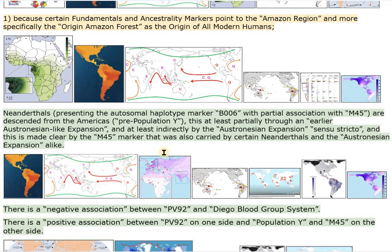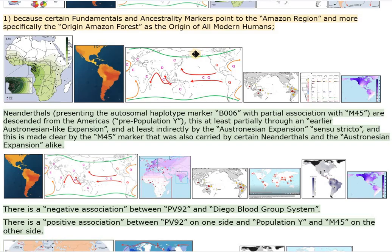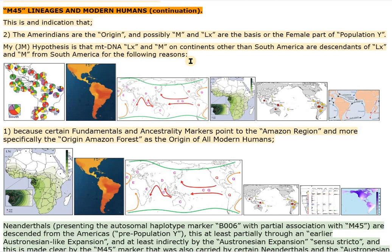LX and M mtDNA did not pass through Eurasia, Beringia, or North America, because these regions do not have consistent LX or M mtDNA. This is an indication that they did not come from Africa and did not descend from Africa. LX and M mtDNA certainly did not cross Beringia and did not descend from the Beringian standstill, where the by-consensus supposed paradigmatic transformation from non-Amerindian ancestral to Amerindian ancestral should have occurred.